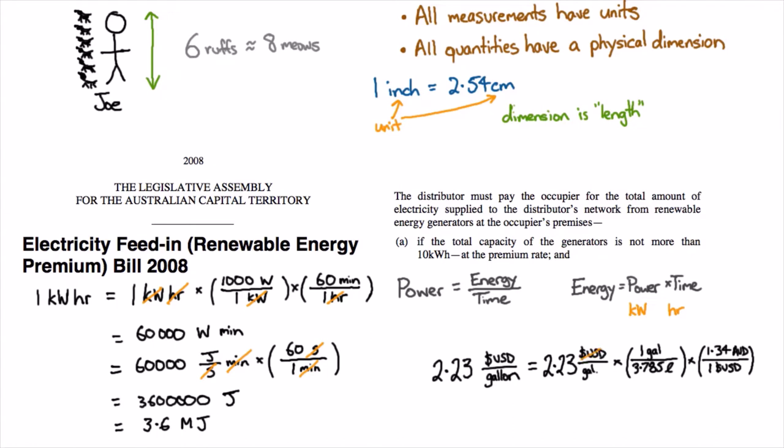And now we see we can cancel the US dollars, we can cancel the gallons and we end up with Australian dollars per litre. And all we've done is we've multiplied by 1 because a gallon is exactly equal to 3.785 litres and we've multiplied by 1 again because $1.34 in Australian is equal to $1 US.